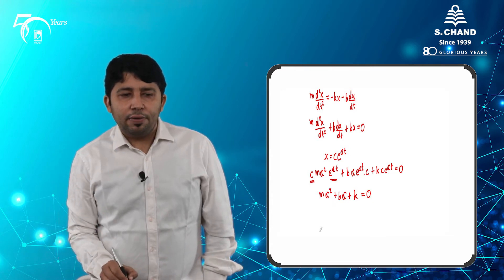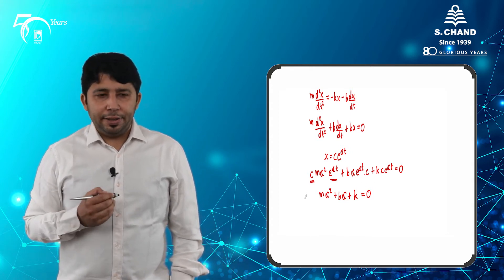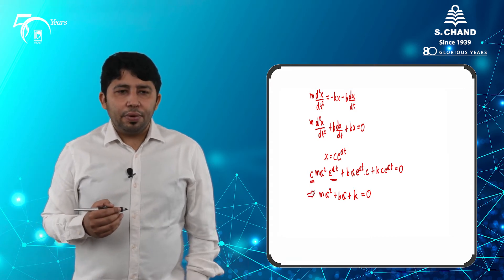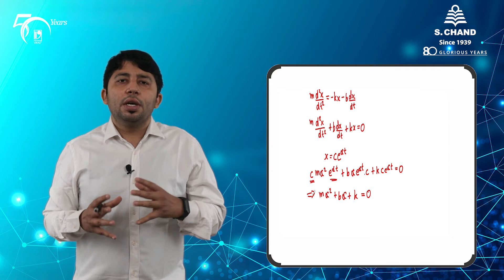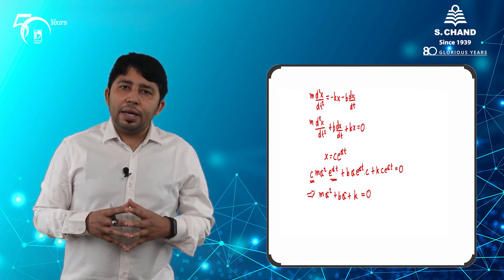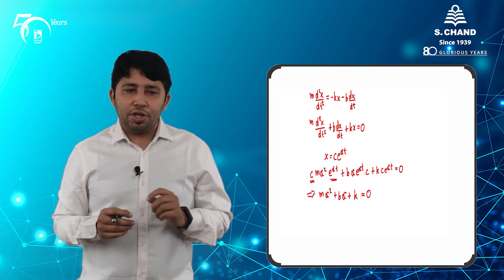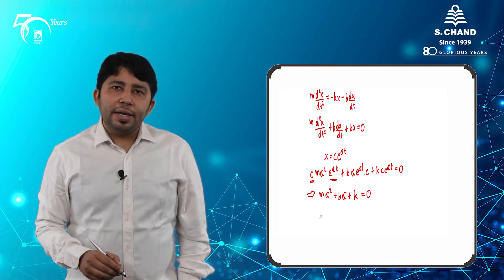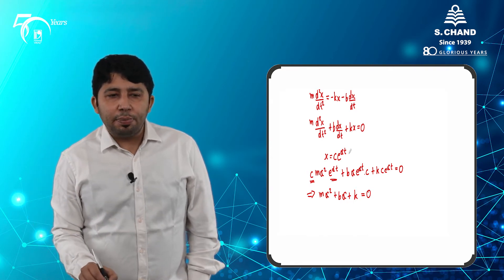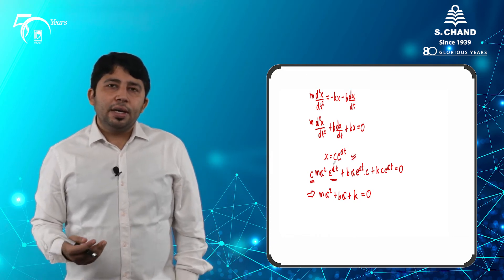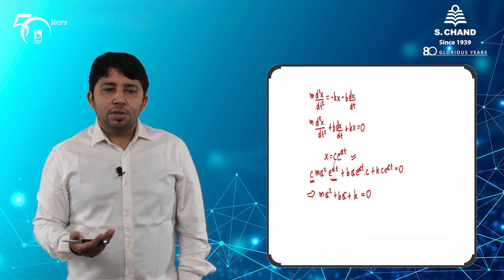This auxiliary equation and its solution will explain how damping can be described. We have already studied second order differential equations in a previous video, where we noted they are very important in such cases. Finding the roots of this equation gives us two values of alpha, which we then insert into the sample solution x = c·e^(αt).